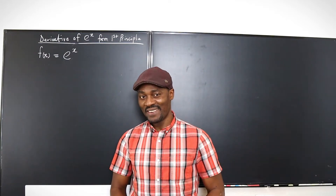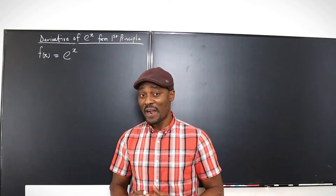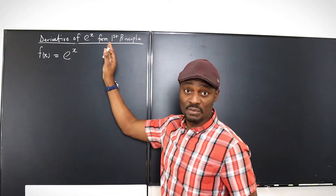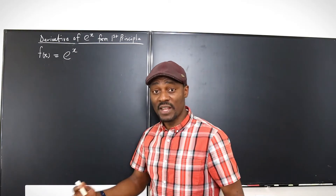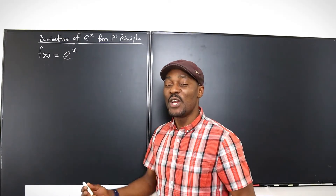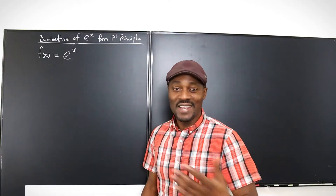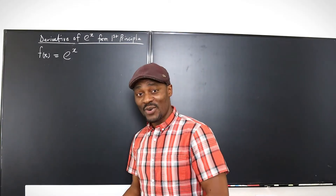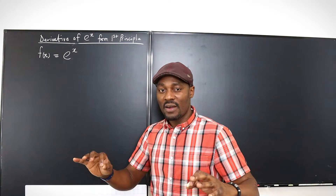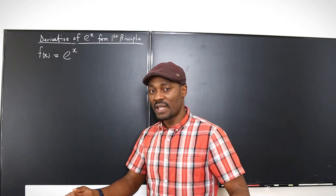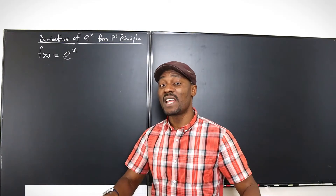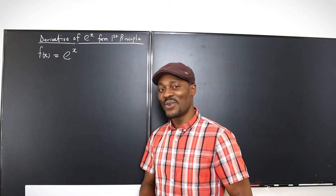Hello and welcome to another video. In this video, I'm going to be showing that the derivative using the first principle — using the actual definition of a derivative — of e to the x is e to the x. We know that because we've used it a lot in differentiation and integration, but how do we establish that from the definition of a derivative? That's what I'm going to show you today, taking you from beginning to end, explaining every single step. Let's go on the journey.